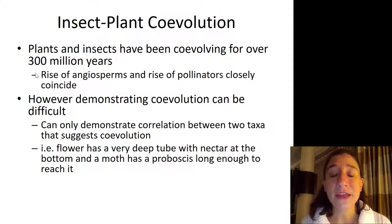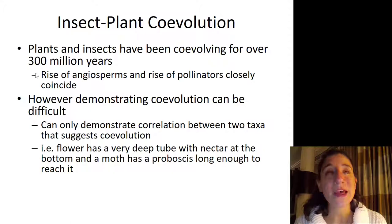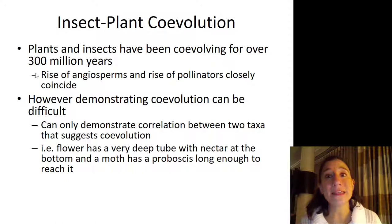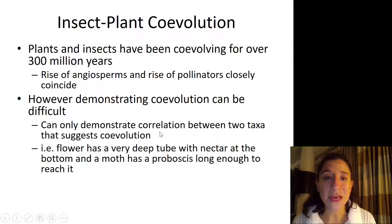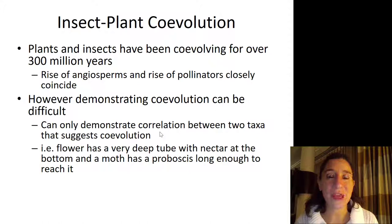If you have done your reading like you should have, you would remember that angiosperms are the flowering plants. The flowering plants are beautiful — we love flowers — and they are probably so beautiful because of insects and the role that flowers play in attracting insects and getting them to pollinate. However, it is difficult to demonstrate that co-evolution has occurred because you can only demonstrate a correlation between two taxa that suggests co-evolution; none of us were around 300 million years ago. All we can see is the correlation and infer causation, which would be co-evolution.